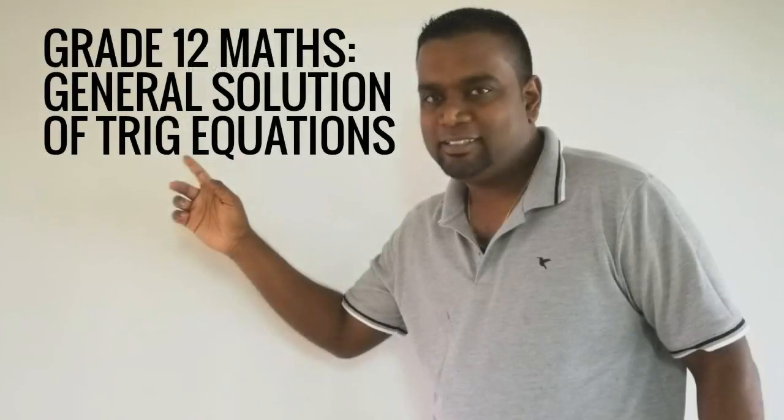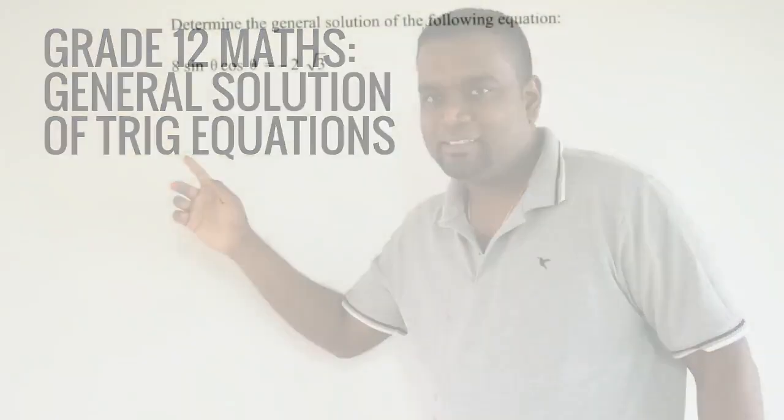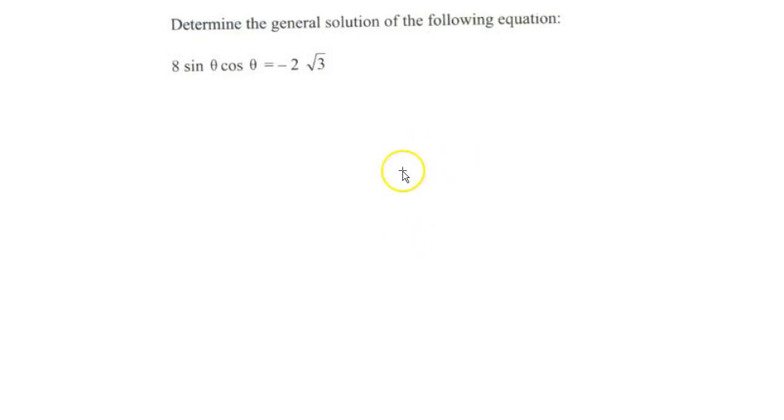Hi guys, in this video we're going to look at the solution of trig equations. So we're going to be solving this equation that's in front of us, which is 8 sin theta cos theta equals negative 2 root 3.